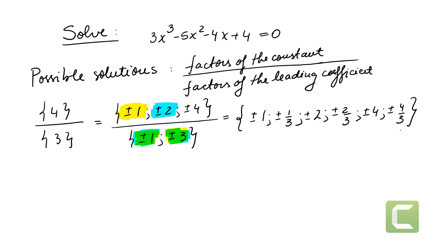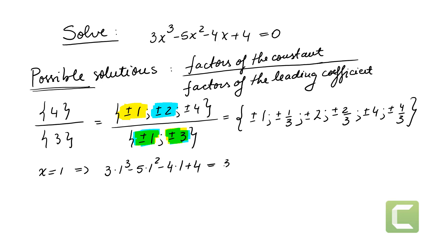These are not solutions yet — they are possible solutions. Let's check if x equals 1 is a solution. We get 3 times 1 cubed minus 5 times 1 squared minus 4 times 1 plus 4, which equals 3 minus 5 minus 4 plus 4, giving negative 2. So x equals 1 is not a solution.